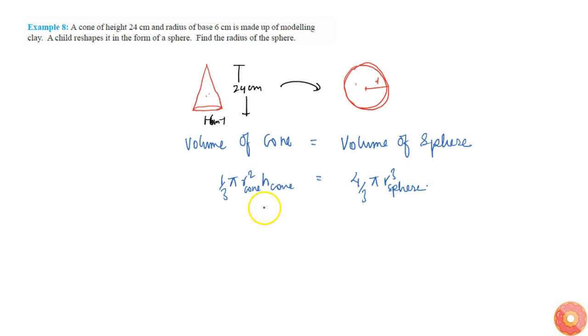Canceling π/3 from both sides, we get r² h = 4R³. Substituting values: 6 × 6 × 24 = 4R³. Simplifying, we get 6³ = R³, which gives R = 6.